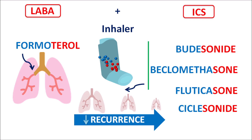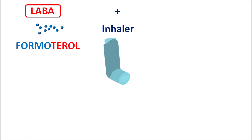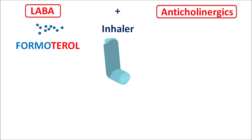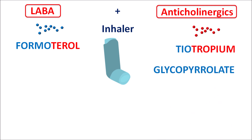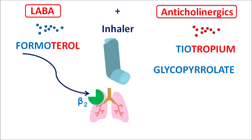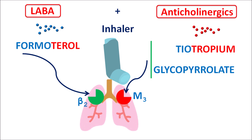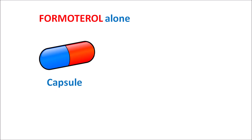So in patients with asthma and COPD, inhaled corticosteroids can reduce the recurrence and serve as preventive medication to reduce attacks. Formoterol can also be combined with anticholinergics such as tiotropium and glycopyrrolate, given either as capsules or inhalers by the inhalation route. Both drugs act on the bronchioles differently — Formoterol activates beta-2 adrenergic receptors while anticholinergics block M3 receptors. Formoterol is an agonist and anticholinergics are antagonists, but both produce bronchodilation. This combination is particularly useful in COPD treatment.